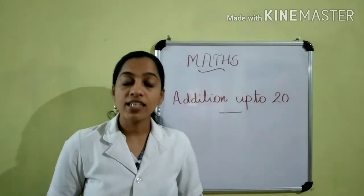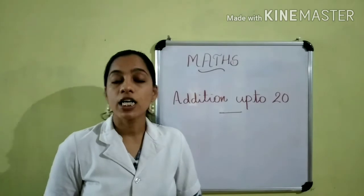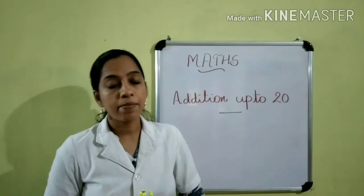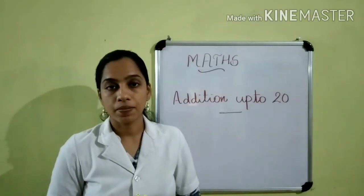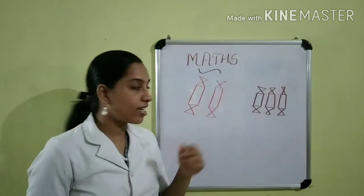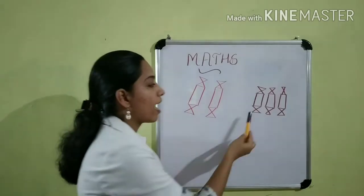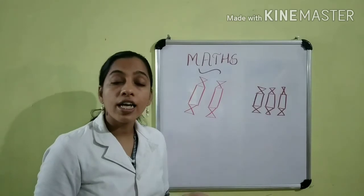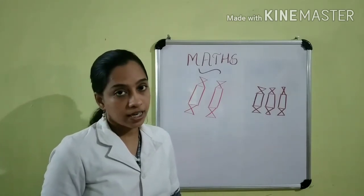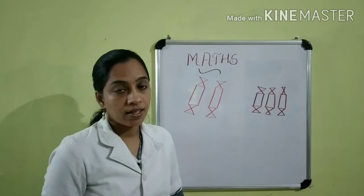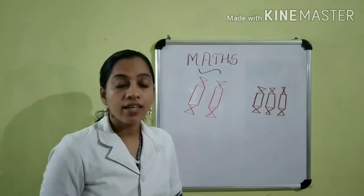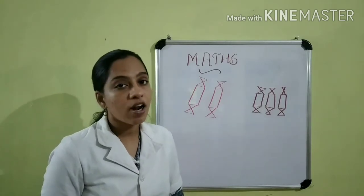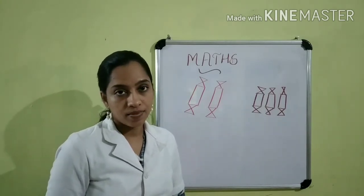So, children, for getting the total number, we will add the things or add the numbers. Okay? Here, you can see two big chocolates and three small chocolates. How will you find out the total number of chocolates? Yes, for finding the total number of chocolates, we will add the number of chocolates.